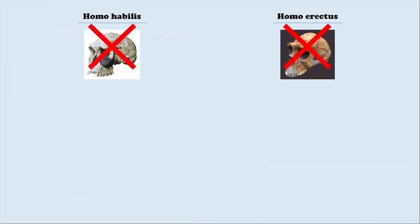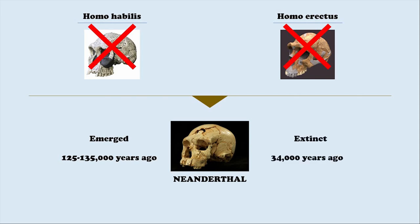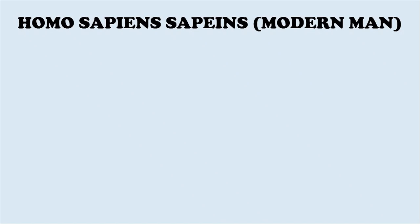After the extinction of Homo habilis and Homo erectus, a new species emerged — the Neanderthals. The Neanderthals emerged around 125,000 to 135,000 years ago and became extinct around 34,000 years ago.